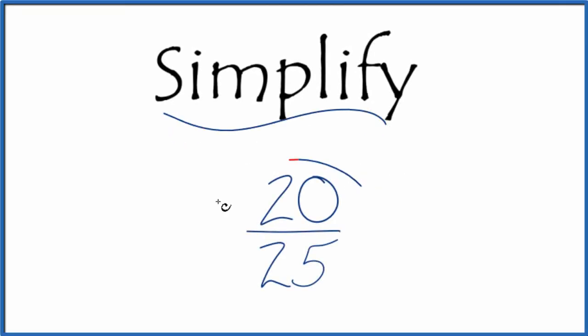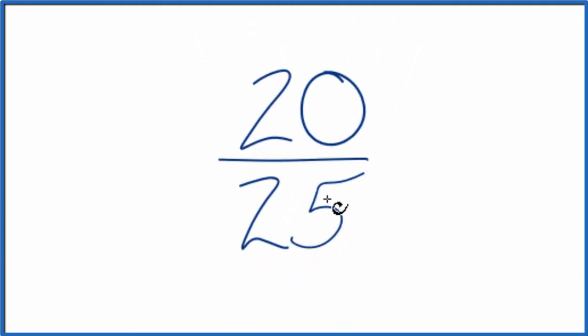Let's simplify the fraction 20/25, and here's how we'll do it. We're looking for another fraction that's equivalent, has the same value as 20 over 25, just that it's in lowest terms.